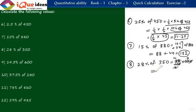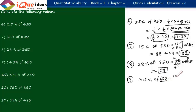Question 9: 14.5 percent of 600. Since 600 is a multiple of 100, use the fundamental method: 14.5 by 100 into 600. The two zeros cancel, leaving 14.5 into 6. Calculating: 6 fives are 30, write 0 carry 3; 6 fours are 24 plus 3 is 27, write 7 carry 2; 6 ones are 6 plus 2 is 8. Final answer: 87.